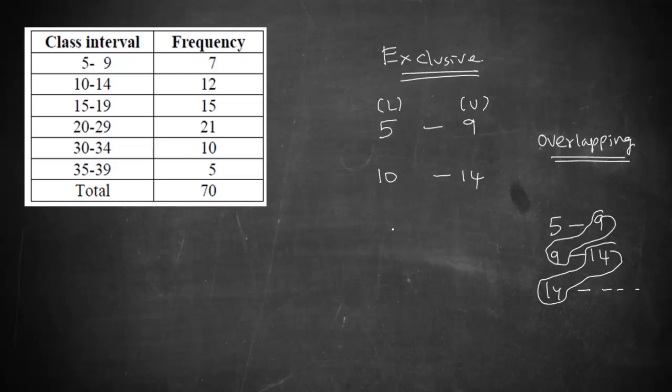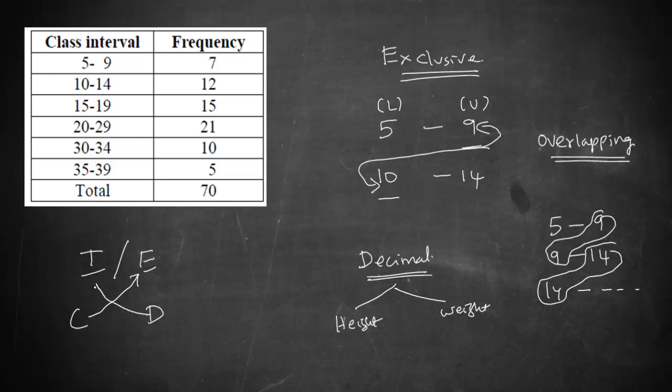But this method cannot be used when the data which you are using is going to have decimals. Say for example you are going to collect the data related to height or weight. Then in such circumstances you cannot afford to have this difference between 9 to 10 because each and every decimal counts. So, which method should be used depends upon the variables that is available, whether the variables are continuous one or is it a discrete one. In case of continuous variables we have to go for exclusive method and in case of discrete variable we have to go for inclusive method.